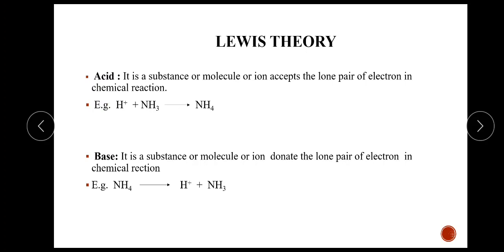Then next is the Lewis theory. According to the Lewis theory, acid is a substance, molecule, or ion that accepts a lone pair of electrons in a chemical reaction. Example is H+ plus NH3, which gives the NH4+ ion. Then next is the base: it is a substance, molecule, or ion that donates a lone pair of electrons in a chemical reaction. Example is NH4+, which gives H+ and NH3.